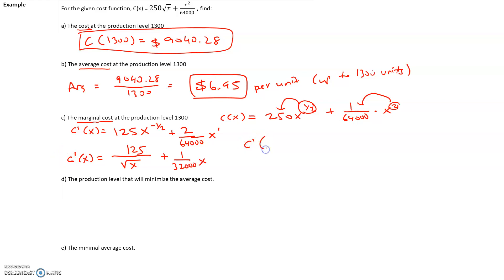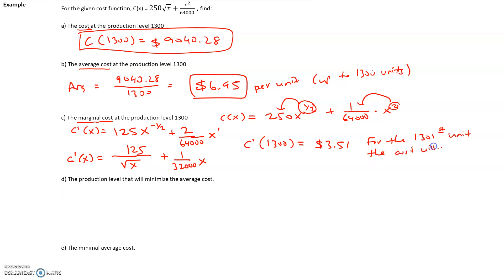We want the marginal cost at a production level of 1,300 units. Plugging into the calculator, C'(1,300) gives us $3.51. So for the 1,301st unit — to produce the next unit — the cost will increase by $3.51. That's what this means.